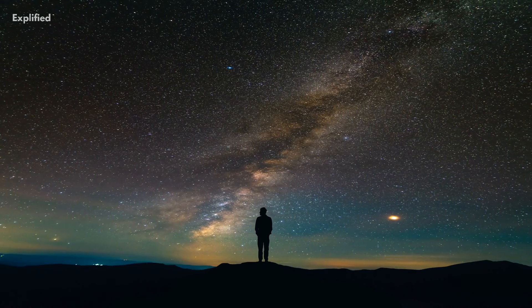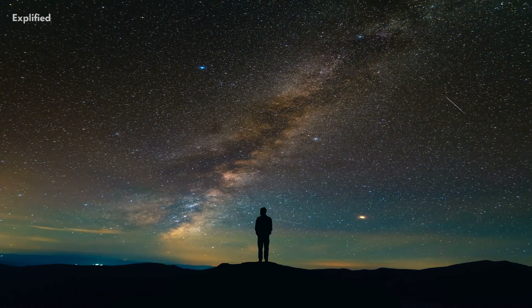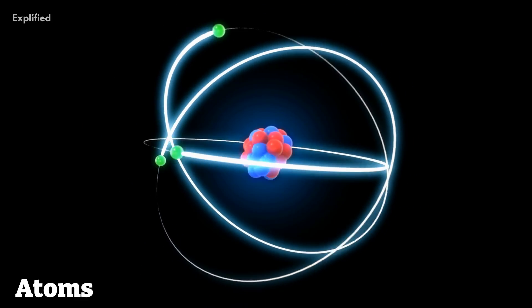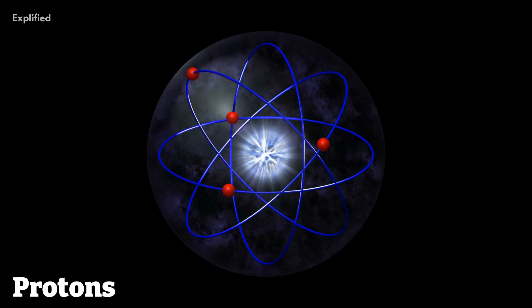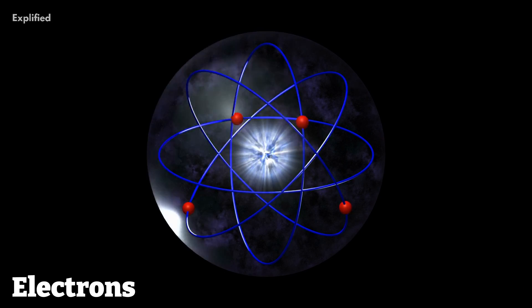Everyday matter, the stuff that forms everything from the stars in the sky to the screen you're reading this on, is fundamentally composed of atoms. These atoms, in turn, are made of protons, neutrons, and electrons.